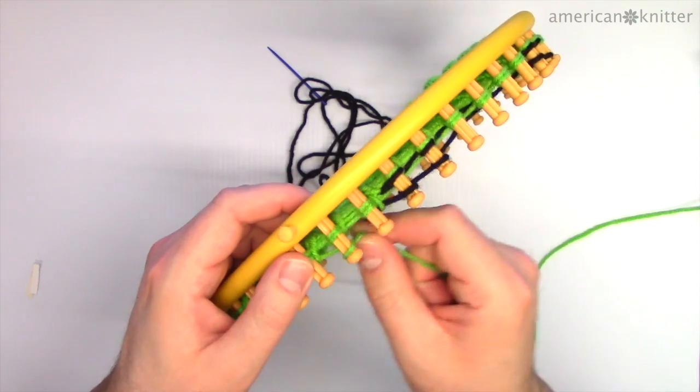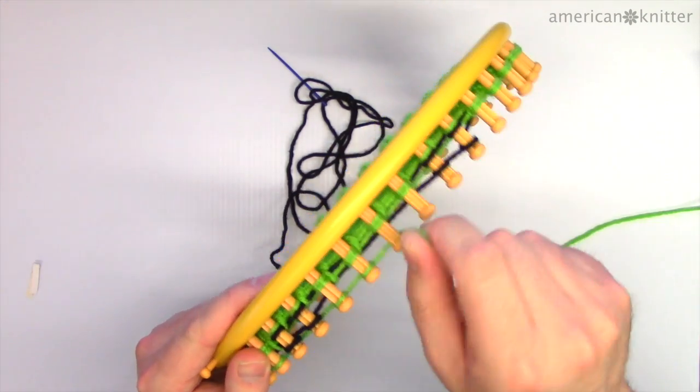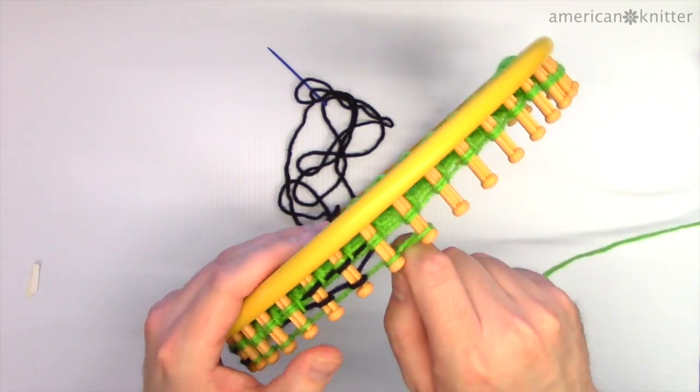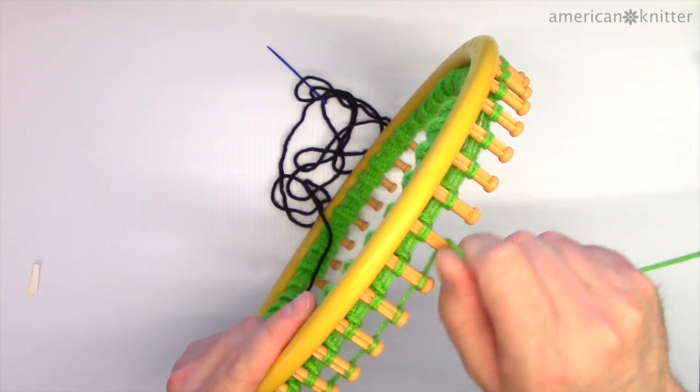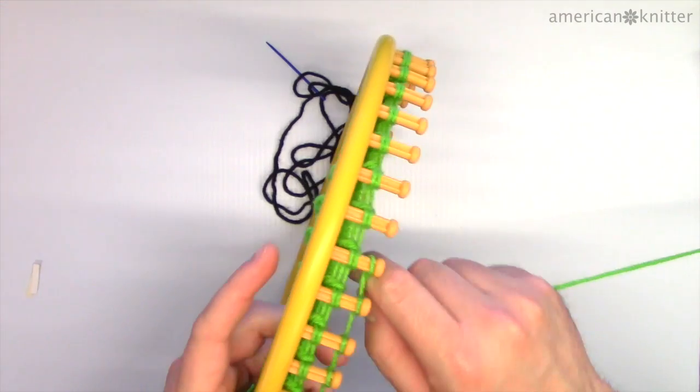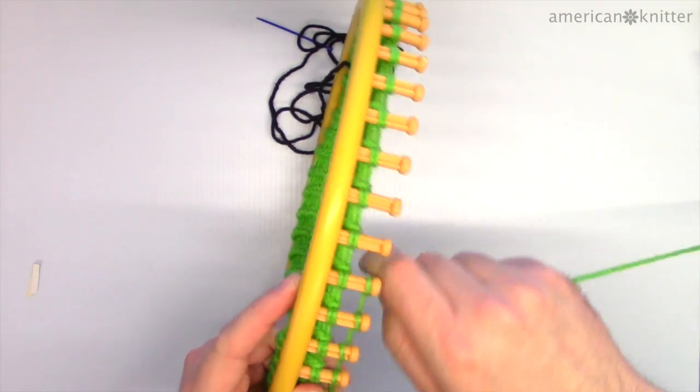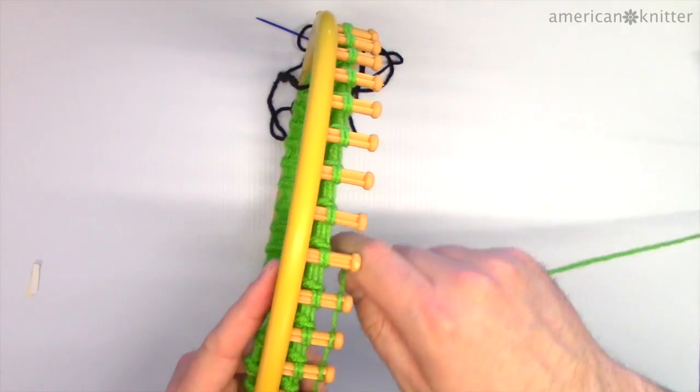Once you've wrapped and secured the black yarn, wrap the green on all the pegs without a loop of black and then pick it off. Continue wrapping and picking in the pattern, remembering to secure the black yarn as you go for 8 rows. Be sure to look at the pattern to keep track of where you are. And remember that the child size hat is slightly different from the adult size hat which you are watching in this video.